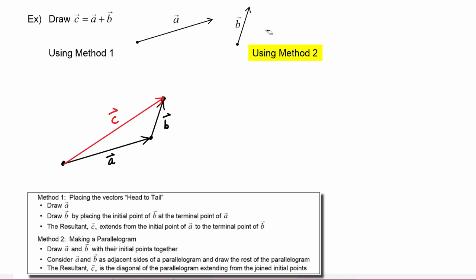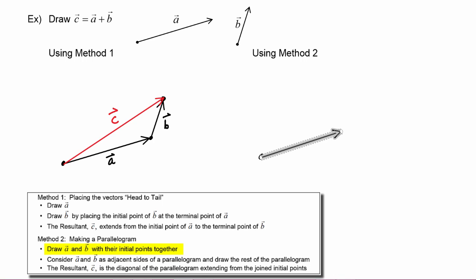Now let's do this addition using method two, where we make a parallelogram. The first step says to draw vector A and vector B with their initial points together. We start by making a point that will be the initial point of both vectors, then draw vector A, and then draw vector B starting from that same initial point.